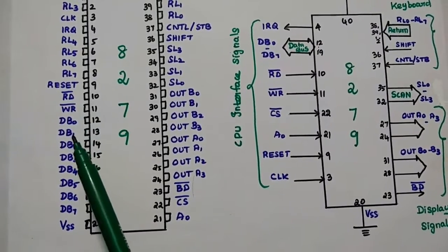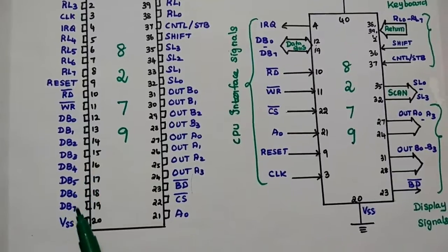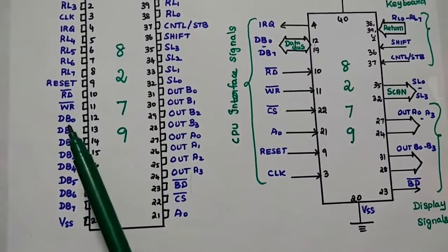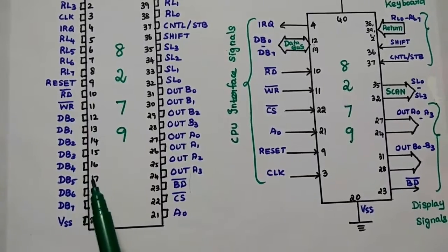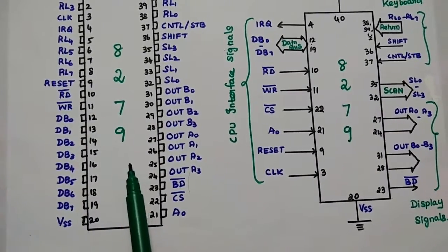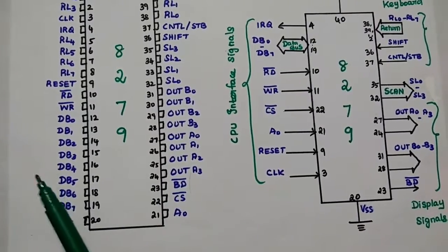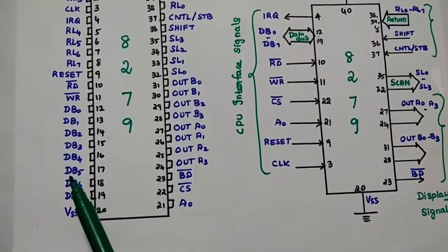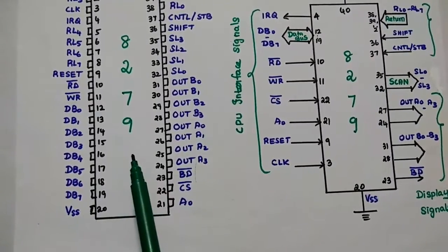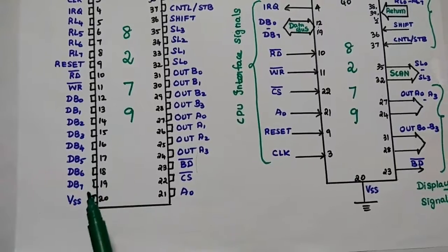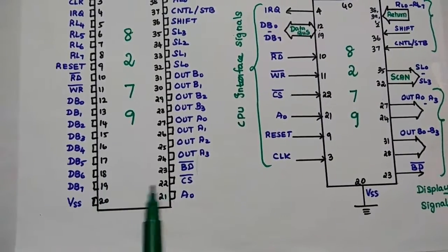The 8-bit data bus is used to transfer data, command words, and status between the 8279 and the microprocessor. This is the communication line between the processor and the keyboard interface. Next is the ground signal on the left-hand side.